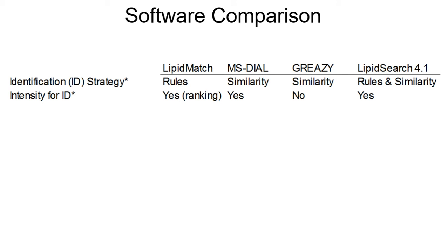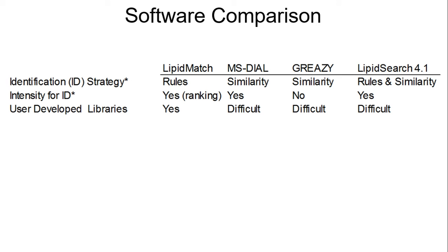LipidSearch also includes similarity and rule-based annotation and reports the correct structural resolution. In terms of user-developed libraries, LipidMatch has the advantage that users can develop libraries in Excel, and all that's needed is the mass-to-charge of the precursor and the fragments desired for each species within that class. A tutorial is included in the LipidMatch folder to show users how to develop those libraries.